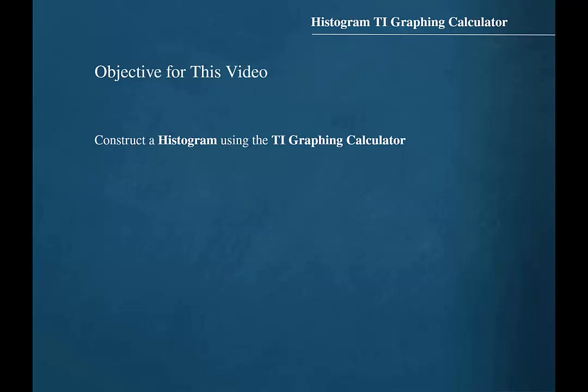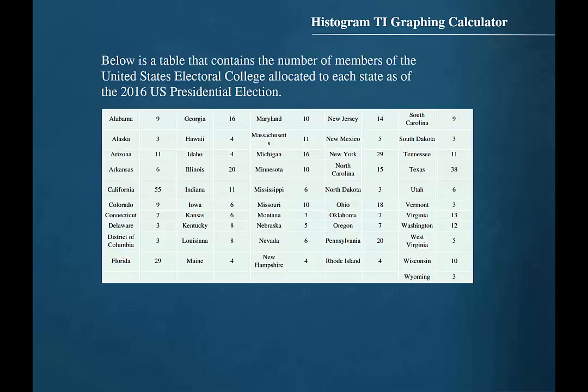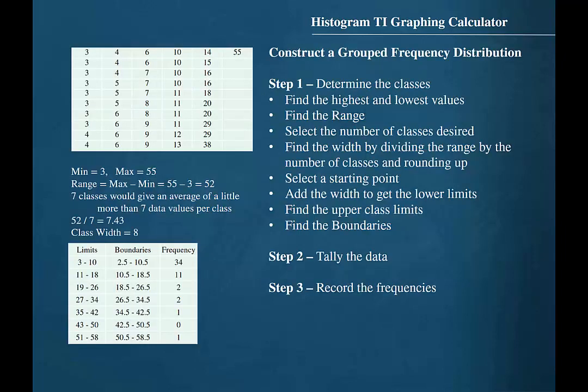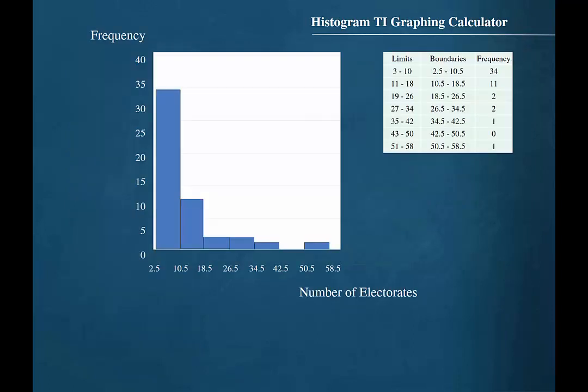The objective for this video is to learn how to construct a histogram using the TI graphing calculator. In a previous series of videos, we used the data for the number of United States Electoral College members allocated to each state as of the 2016 US presidential election in order to learn how to construct a grouped frequency distribution and then a histogram.